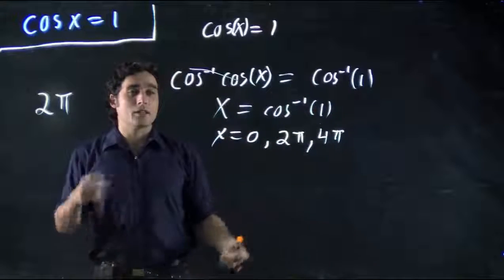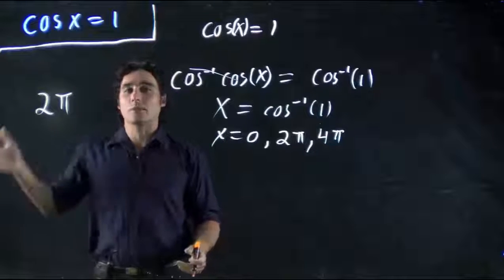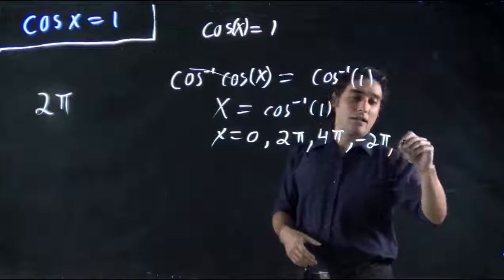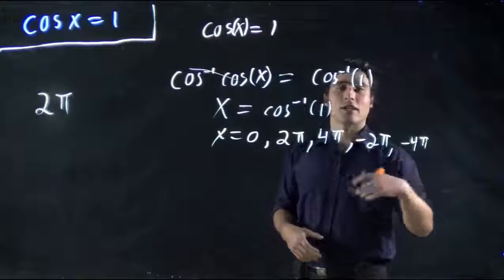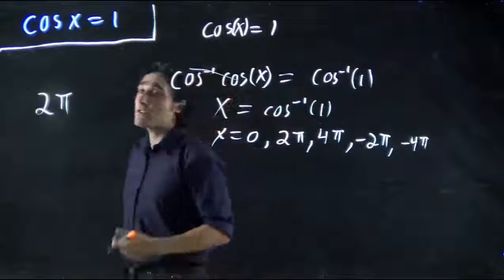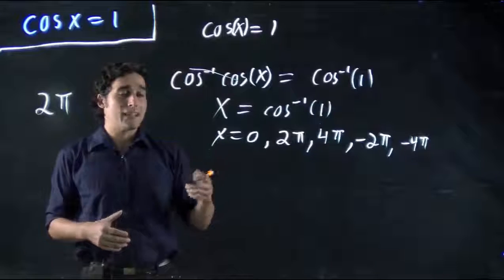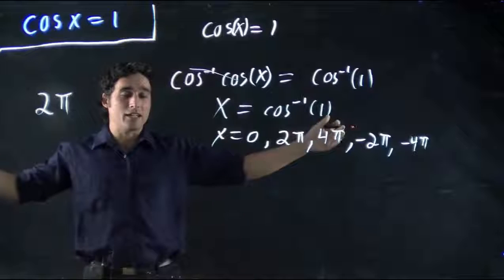But the thing is, we also have it repeating in the opposite direction. So, it's also going to be repeating itself at minus 2 pi, and minus 4 pi, et cetera, et cetera. Minus 6, minus 22 pi, minus 2 billion pi. It'll repeat itself. There's basically limitless answers, because we can keep going in each direction.